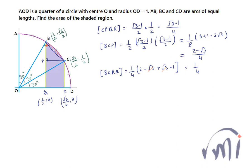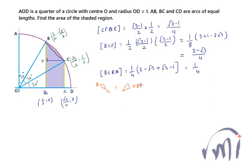The area of segment BC equals the area of sector OBC minus the area of triangle OBC. This gives us the area of just the circular segment between chord BC and arc BC.